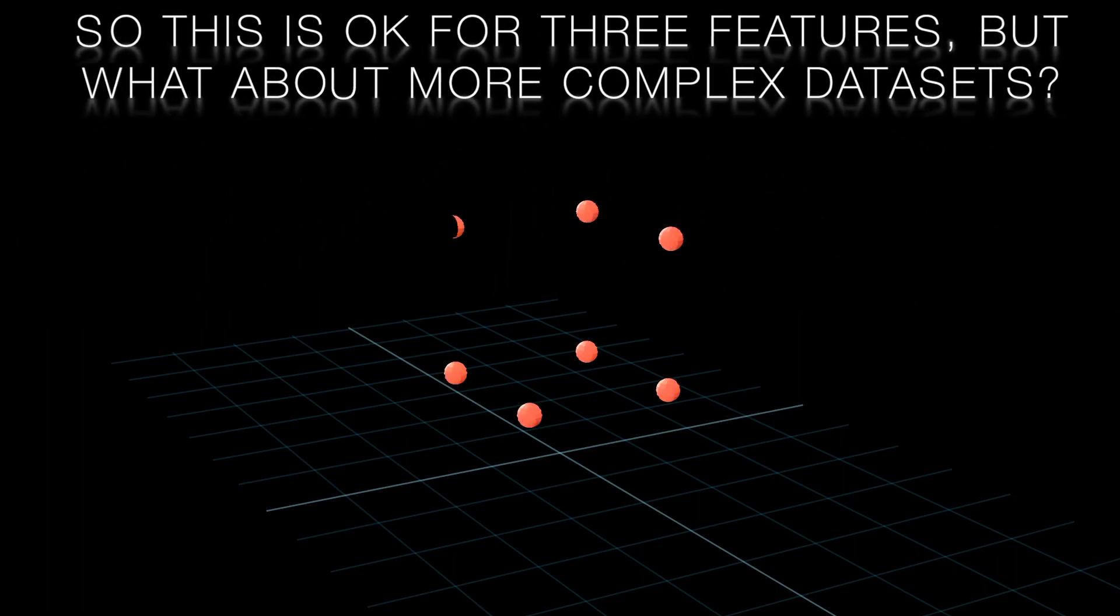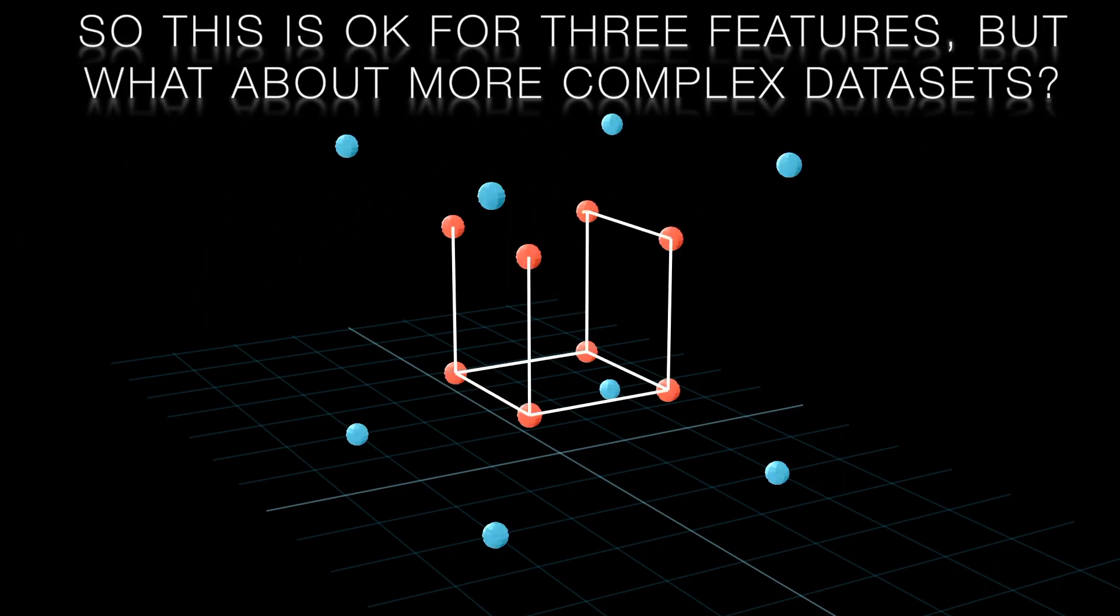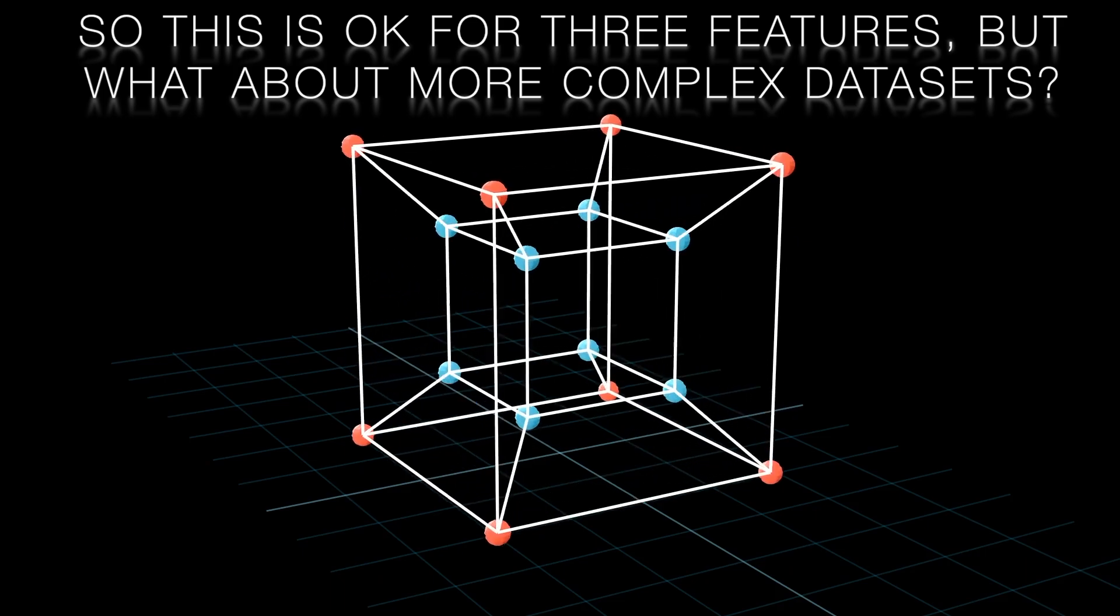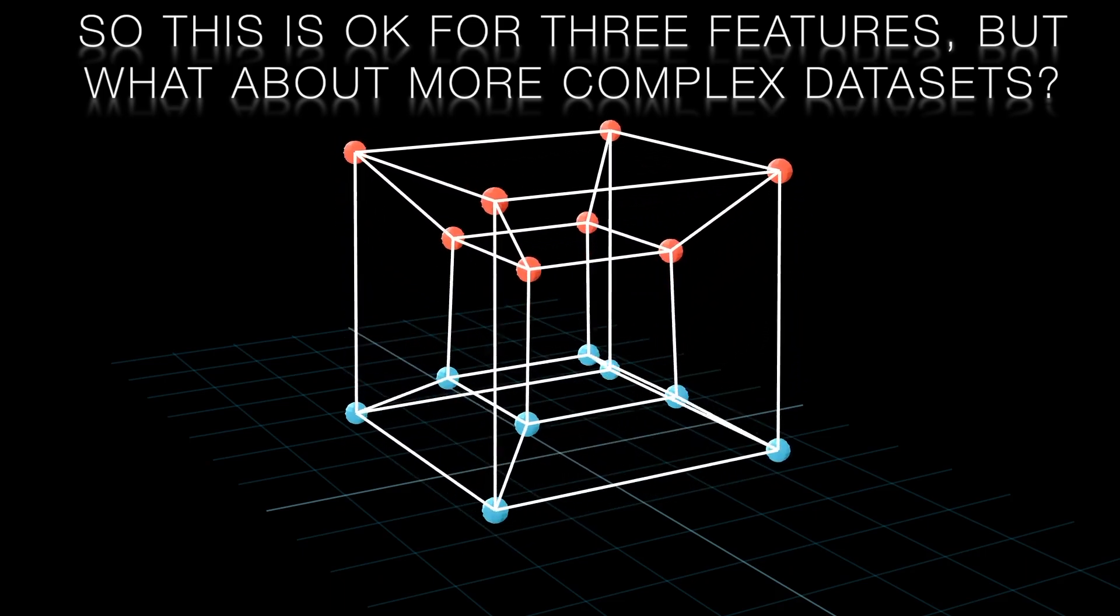Bear in mind this is a simplified example. For practical data sets we will have many more than three features. Our loan data set has a dozen and many data sets will have an order of magnitude more than that.